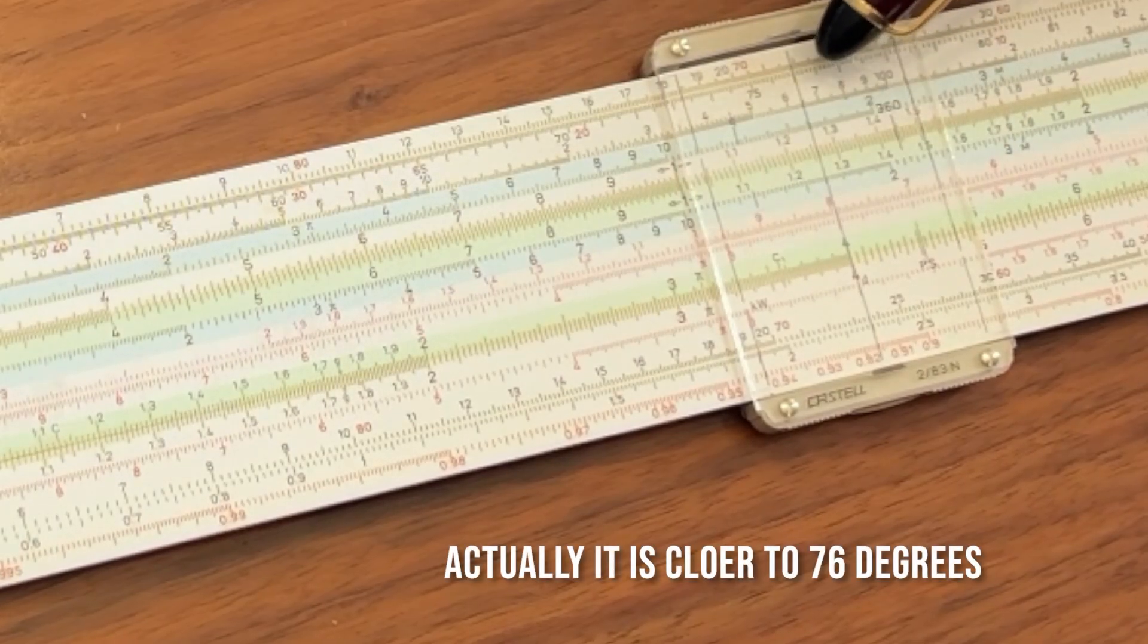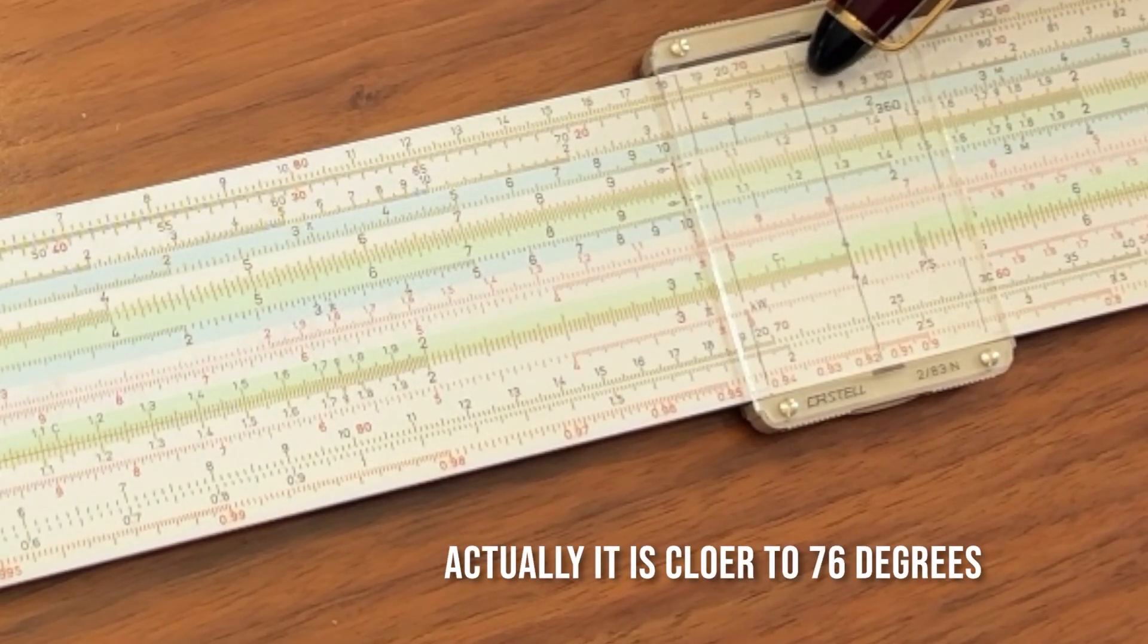However, the tangent of 77 degrees is going to be 4.